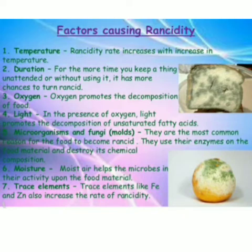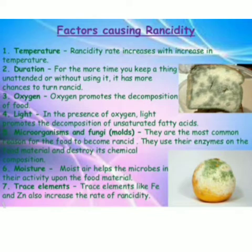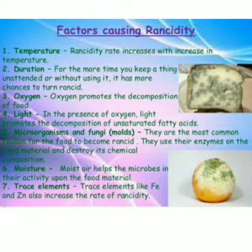Third is oxygen — oxygen promotes the decomposition of food. Number four is light — in presence of oxygen, light promotes the decomposition of unsaturated fatty acids. Number five is microorganisms and fungi such as molds — this is the most common reason for food spoilage. They use their enzymes and destroy the whole chemical composition of food. Number six, moisture also helps microbes to start their activity. And the last is trace elements in the form of zinc and iron, which also increase rancidity.